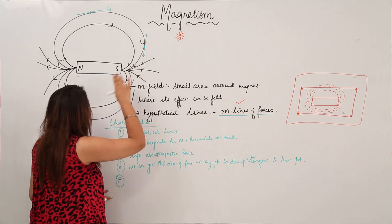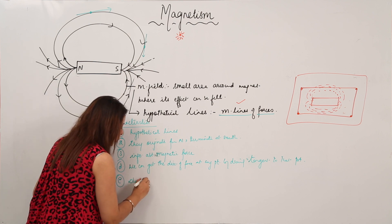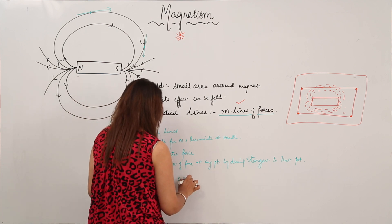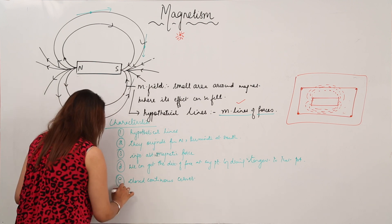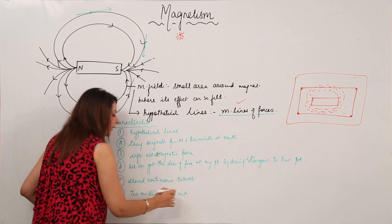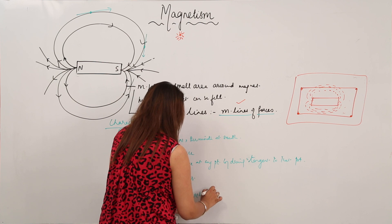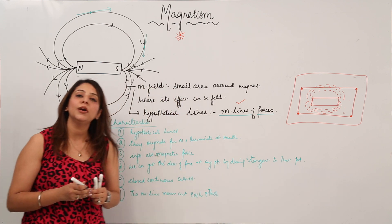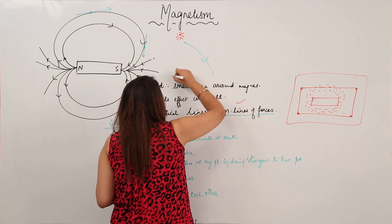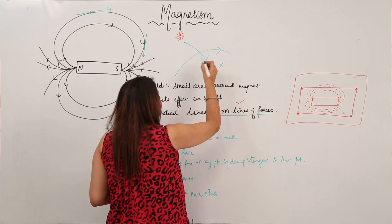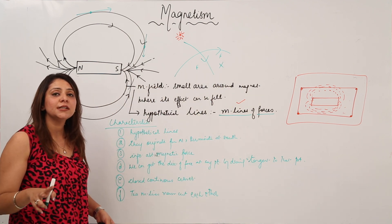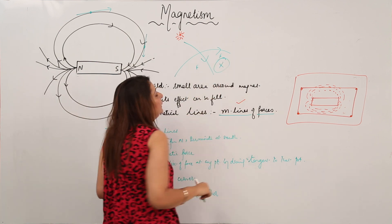Magnetic lines are closed continuous curves. Also, two magnetic lines never cut or intersect each other. The reason is that they represent the direction of force. If they intersected, it would mean force has two directions at the same point, which is impossible since force is a vector quantity — it can only have one direction.